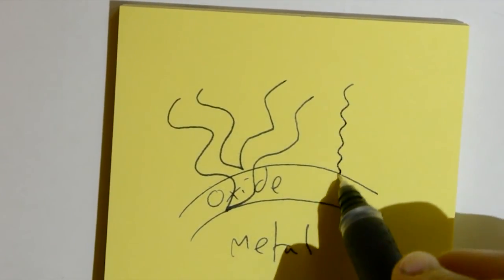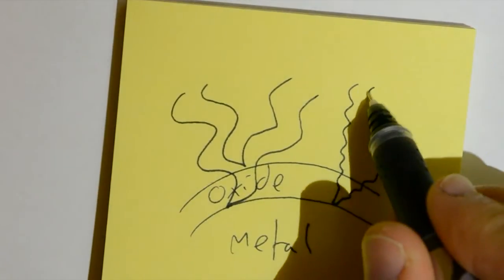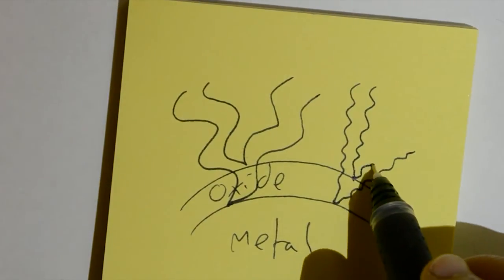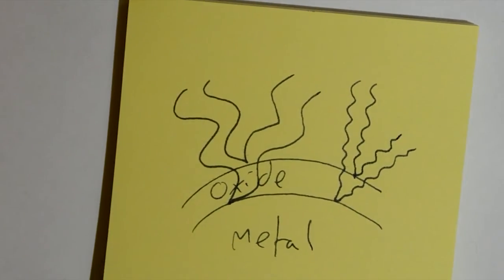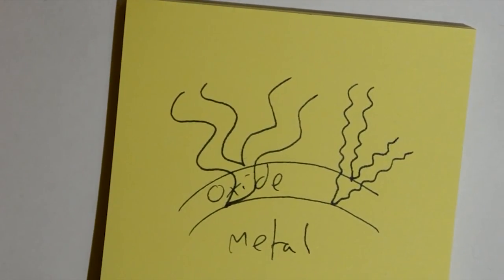Depending on the thickness of the oxide layer, different wavelengths will either become brighter or cancel each other out due to this interference. The wavelengths that return to your eyes determine the colour you see.